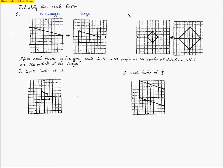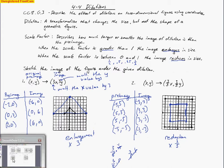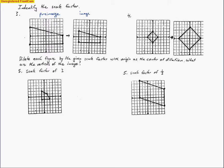Remember what we did in the last section — we ended up multiplying the pre-image by a scale factor. In that case the scale factor was 3, which made it bigger. Here the scale factor was 3 fifths, which is smaller than 1, making it a reduction. So that's what we're trying to figure out — what that scale factor is. Notice this image is bigger and this one's smaller, so I know the scale factor is going to be a fraction.